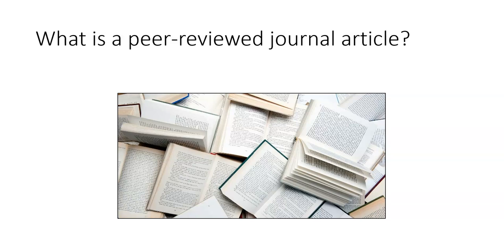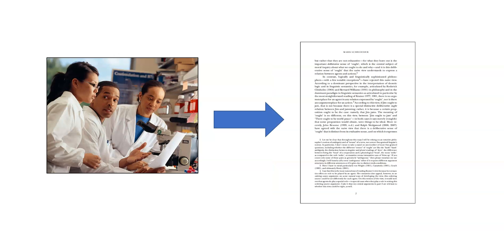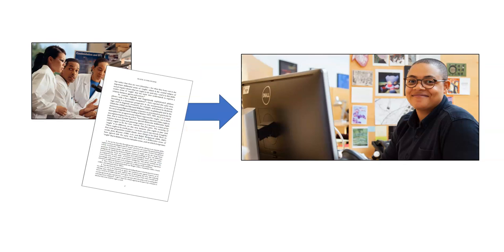So what is a peer-reviewed journal article? The easiest way to explain is to tell you what the peer review process looks like. The article writing process starts with a group of researchers who have a research idea, conduct the necessary research, and write a manuscript. When that manuscript is complete, they decide which journal they would like to send it to and then send it to that journal.